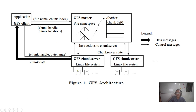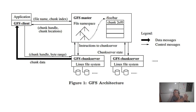Google published the paper but not the source code. The Apache open source foundation then developed the Hadoop Distributed File System based on Google's design. Google continued developing the Google File System internally, making the technology's design available without the source code, and others — particularly the Apache Foundation — copied it as Hadoop.